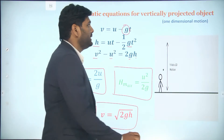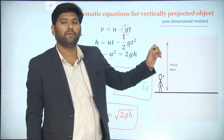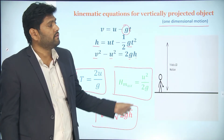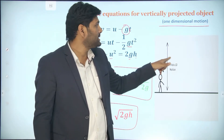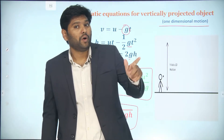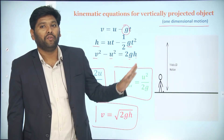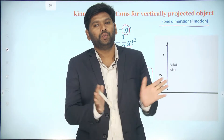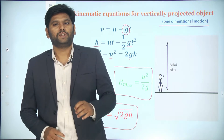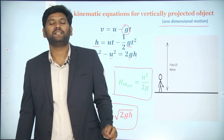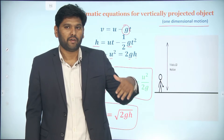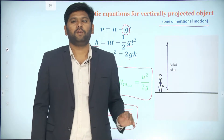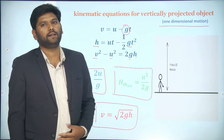Concentrate here, students. This is one-dimensional motion. Why do we call it one-dimensional motion? If you observe all physical quantities — velocity, displacement, acceleration — all are acting in one direction, along the vertical. Since all physical quantities act in one direction, we call this one-dimensional motion. Now the question is: if all physical quantities act in two directions, what is the name of that motion? That is two-dimensional motion, and that is what we will study next — it is a very important topic for IIT mains and advanced.